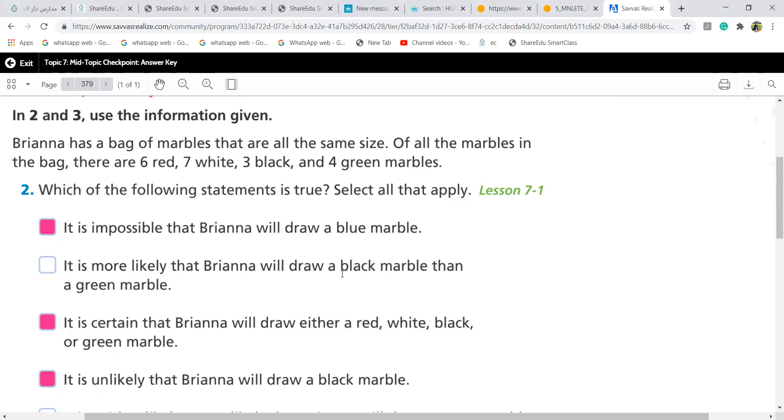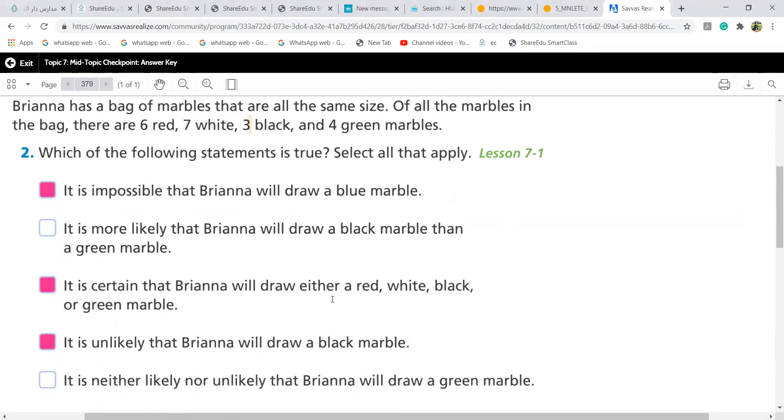When we say it's more likely that Brianna will draw black than green, see black and green. Three black and four green. Of course, black are less. So it's wrong. It's actually more likely to draw green when compared to black, not black when compared to green. It's 100% sure that either she will pick up red, white, black and green. Now example, I gave you a bag of these marbles. I said, please pick one. Is there any chance that when you pick up, you don't get anything? You will get either one red or one white or one black or one green. It's 100%. So it's certain that Brianna will draw either a red or white or black or green marble.